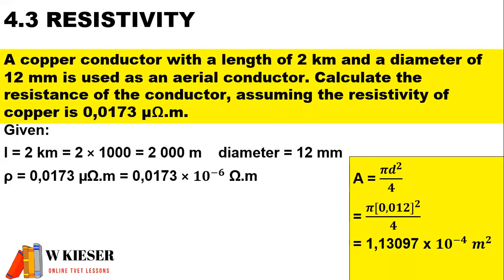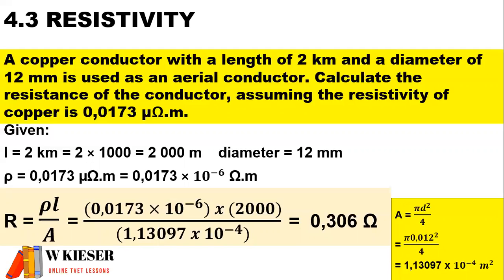To calculate the cross-sectional area, we use the formula pi d squared over 4. The diameter needs to be in meters, so we convert 12 millimeters by dividing by 1,000. Inside our formula it will be pi multiplied by 0.012 squared, divided by 4, in order to get the cross-sectional area in meters squared. Once we substitute all those values to calculate the resistance, the resistivity is 0.0173 times 10 to the power of minus 6, the length of the conductor is 2,000 meters, and the cross-sectional area is 1.13097 times 10 to the power of minus 4. Therefore, the resistance of the conductor is 0.306 ohms.